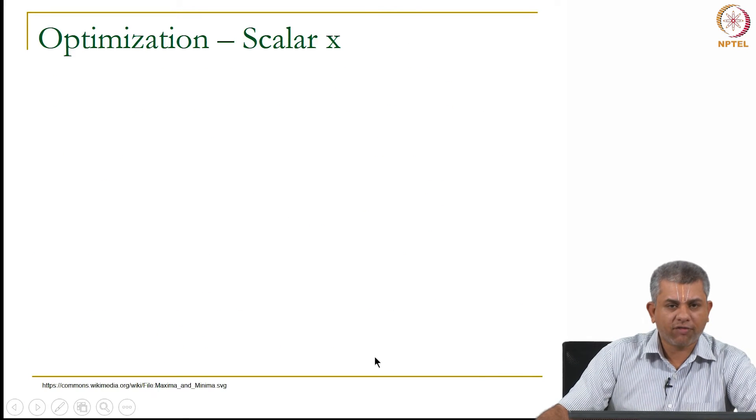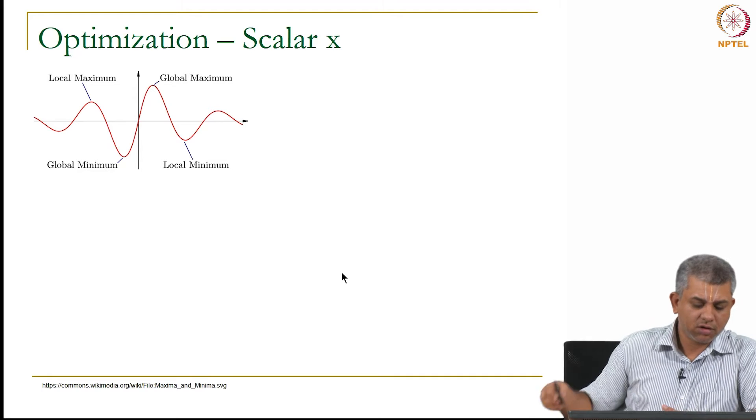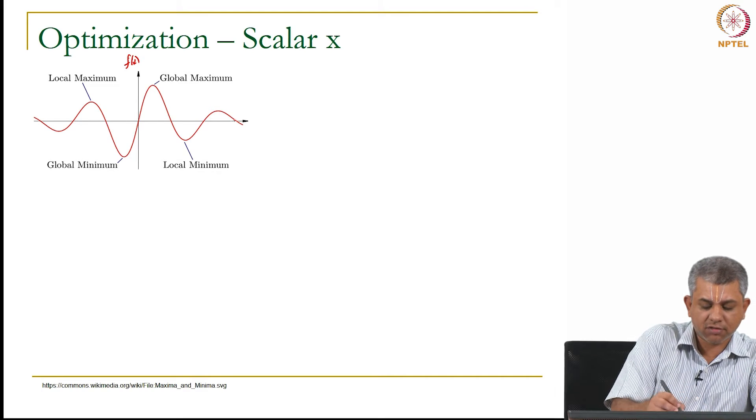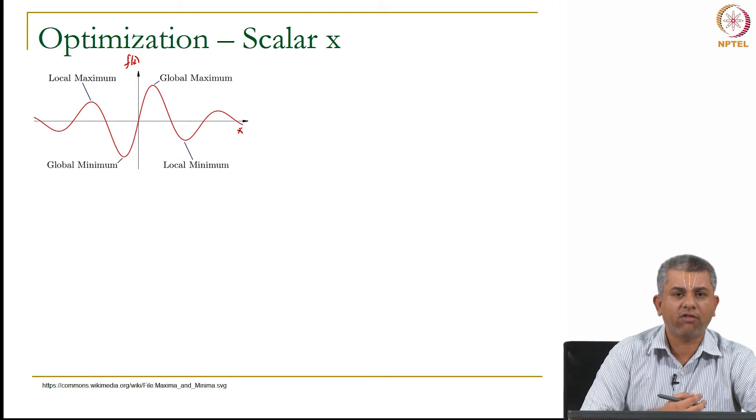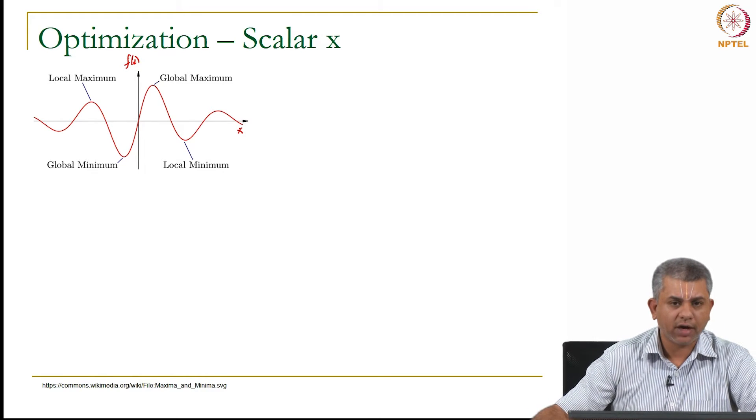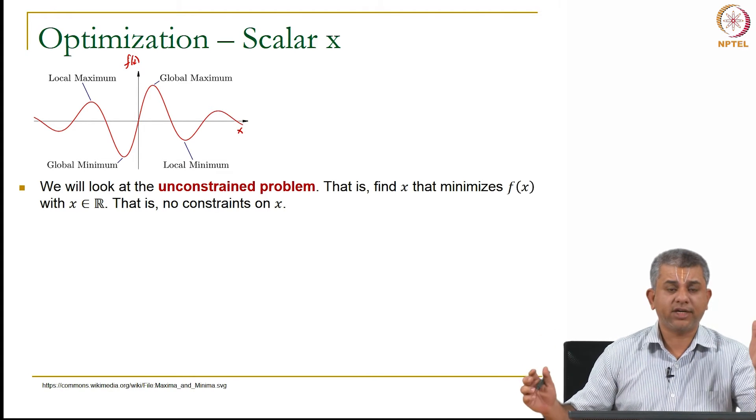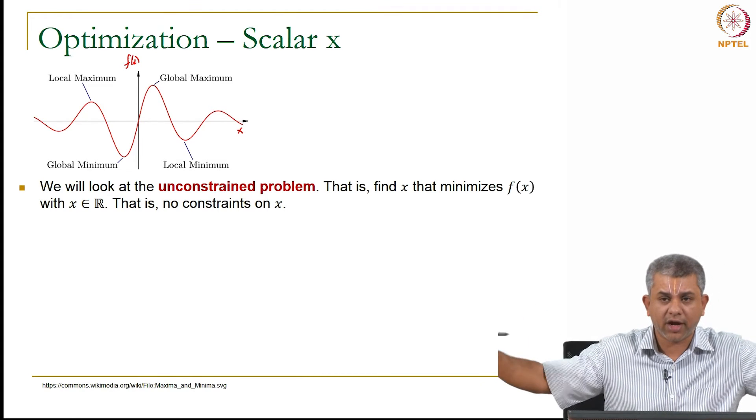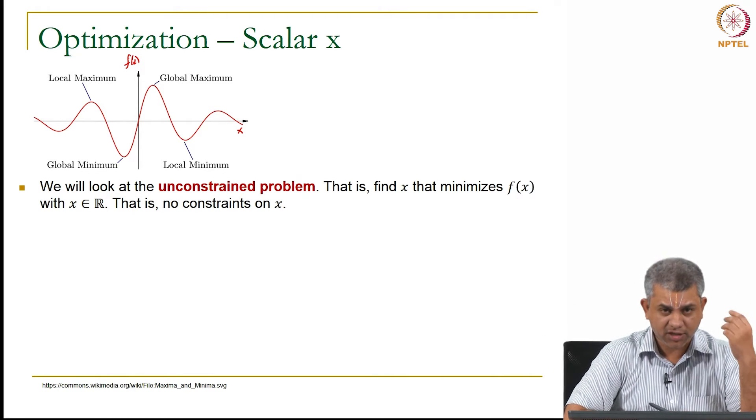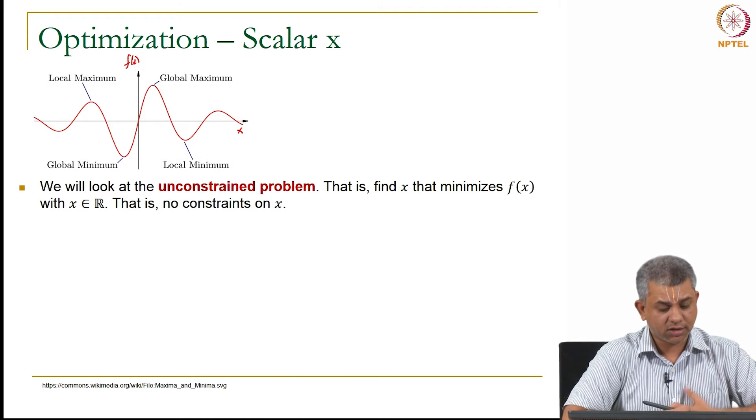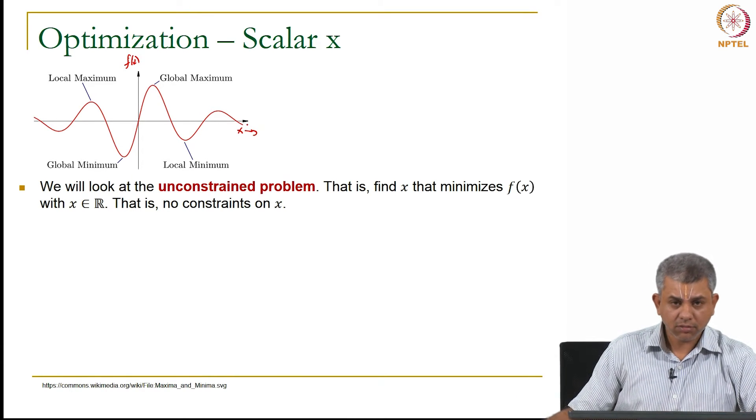So here is a quick review of scalar optimization. So as you remember, if you have some function f of x versus x, it is in general going to be a curve and you are going to have various minima. For now we are going to look at the unconstrained problem. Unconstrained problem means there are no constraints on x, there are no limits on x, we are looking at x belonging to the whole of the real line. We will look at the constrained case in the next video. For now in this video we are only looking at the unconstrained problem, so we will assume x can go from minus infinity to plus infinity.